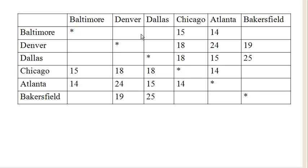One option would be to draw a graph — we could draw out Bakersfield, Atlanta, Chicago, and draw the connections and work off it that way. But let's see if we can work directly off the table. We're going to start in Bakersfield, because it's our end position. Remember, we're going from Baltimore to Bakersfield, and so we mark it as having a distance of 0 from the end.